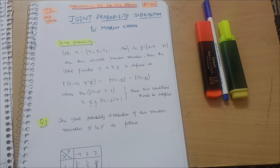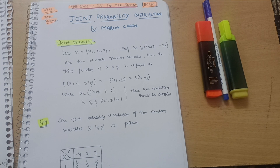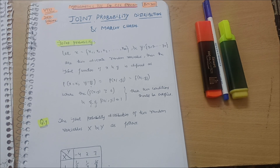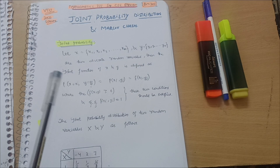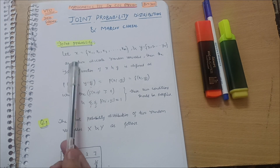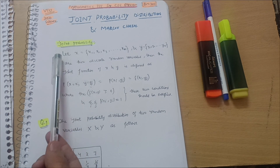Dear friends, welcome back to my new lecture of Mathematics 3 for the CSC stream. The subject code is BCS301. The module name is Joint Probability Distribution, so let me give you a brief explanation about joint probability and what it means.